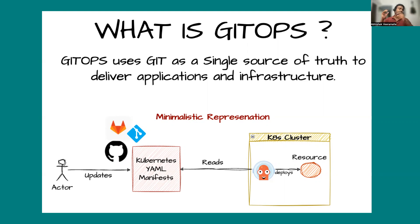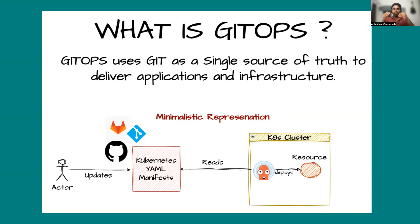GitOps is complicated if you don't understand the fundamentals well. You can take an application, use a GitOps controller — probably Argo CD or Flux CD — and deploy it onto a Kubernetes cluster, but that's a very basic or first stage. GitOps is much more than that, and in this video we will try to understand the fundamentals of GitOps: what is GitOps, why GitOps, what used to be before GitOps, and its relation with Kubernetes.